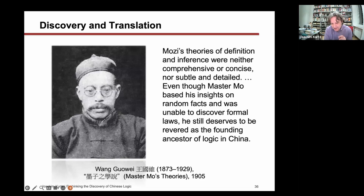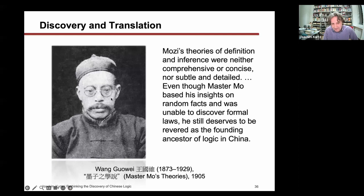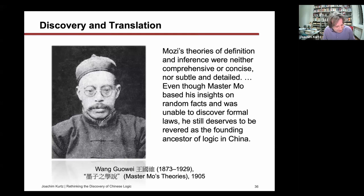The polar opposite of Liang Qichao was Wang Guowei, who also changed his mind in 1905 but not as drastically. He said: 'Mo's theory of definition and inference were neither comprehensive or concise, nor subtle or detailed. Even though Master Mo based his insights on random facts and was unable to discover formal laws, he still deserves to be revered as the founding ancestor of logic in China.' But then he concluded: all we can do is put it in the archive—we had it, but unfortunately it died out in 141 BCE and since then it never had any influence on what we did. From a scholarly point of view this is perhaps the more sincere assessment, but it's not the one that won out.